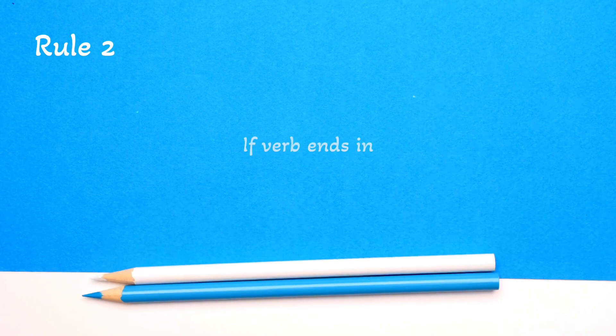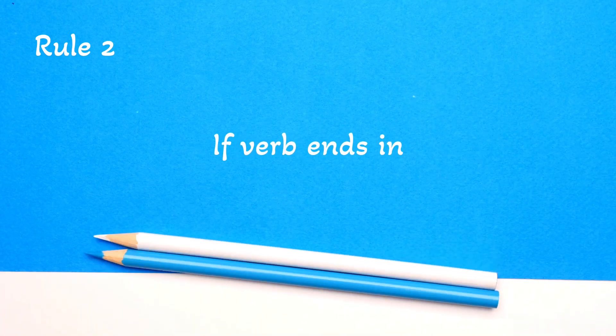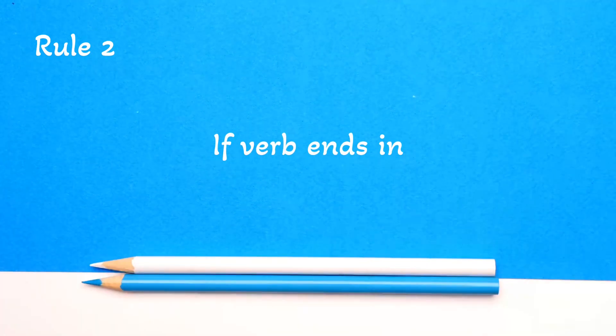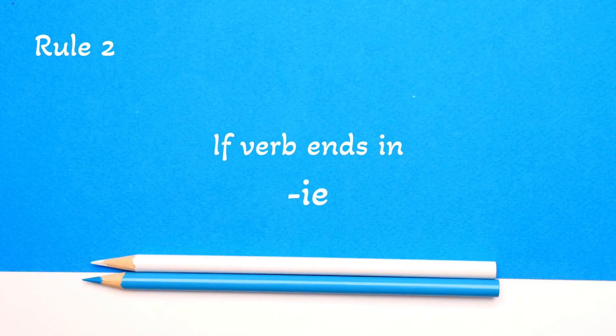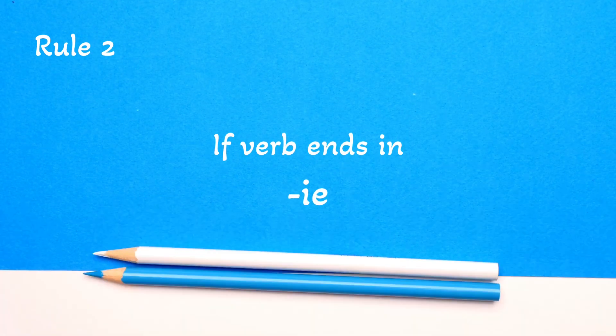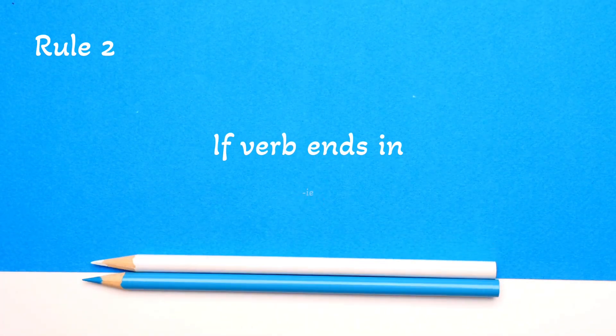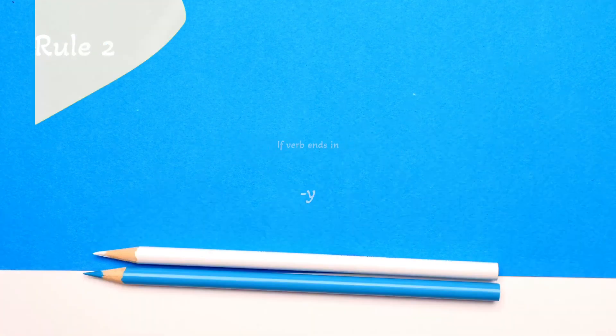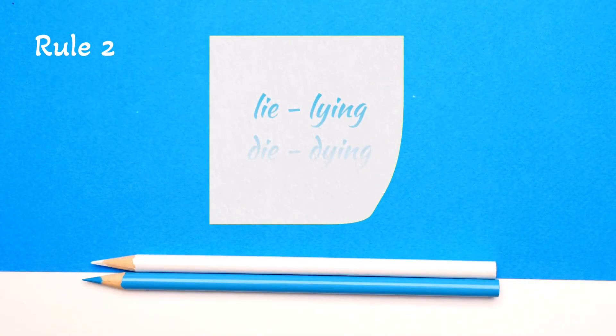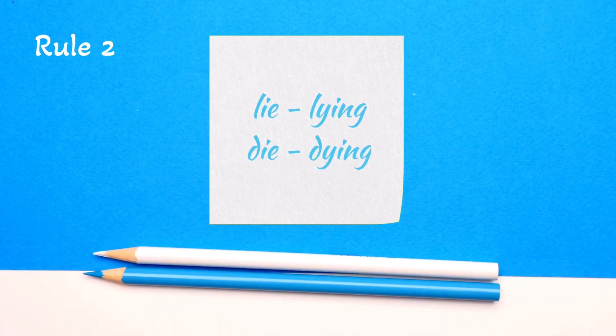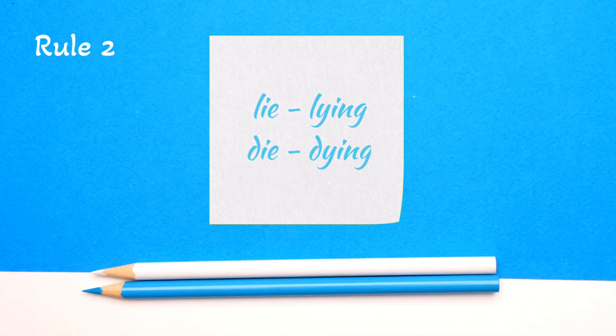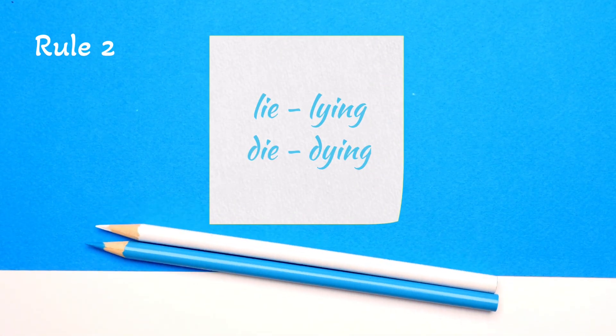Rule number two: if the base verb ends in -ie, we change the -ie to -y. For example: lie → lying, die → dying.